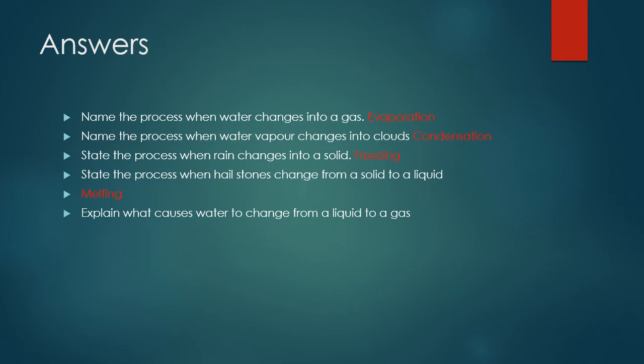Explain what causes water to change from a liquid into a gas. When a liquid gains heat or it becomes hot, it changes from a liquid into a gas. Think of boiling water in a kettle — you will see the liquid changing into steam. When we heat up water, it changes from a liquid into a gas. In the water cycle, the sun heats the water up and causes the liquid to change into a gas called water vapor. So in the water cycle, the main source of heat is the sun.